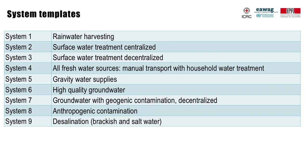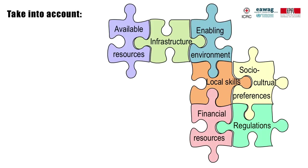These different system templates, as well as information sheets for each technology, are summarized in the compendium of drinking water systems and technologies from source to consumer. The technologies presented in the compendium and the links between them are not exhaustive. Planners and designers should try to make the best use of available resources and optimize or rehabilitate existing infrastructure, while taking into account the local enabling environment, including local capacities and skills, financial resources, regulations, and social-cultural preferences and acceptance.